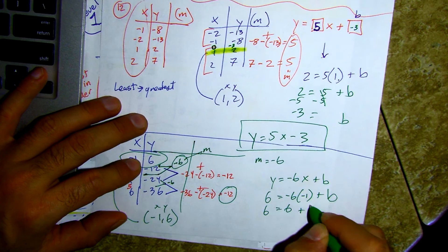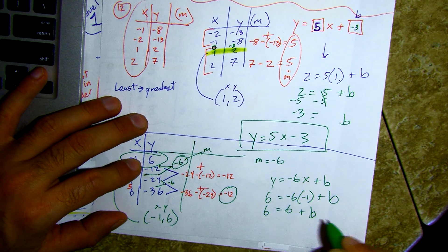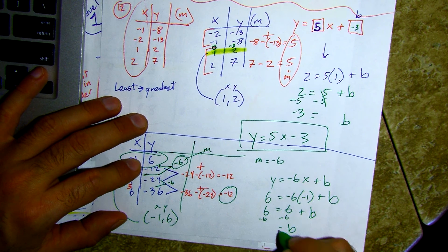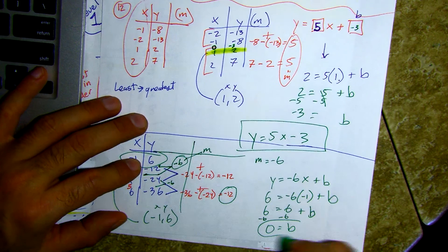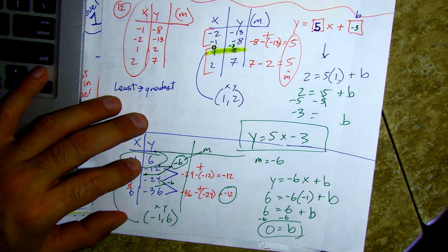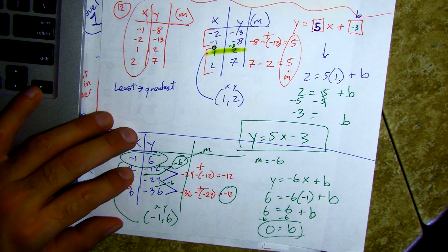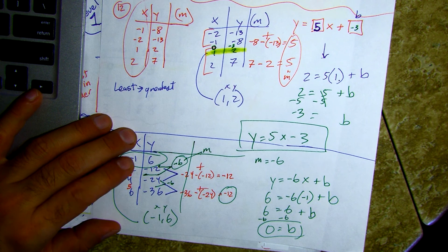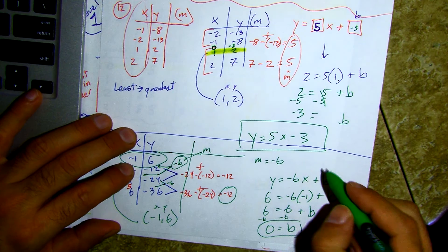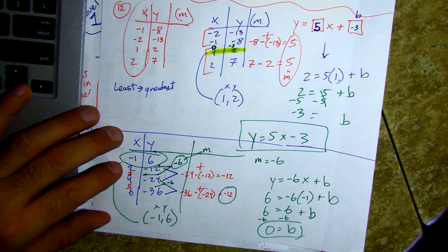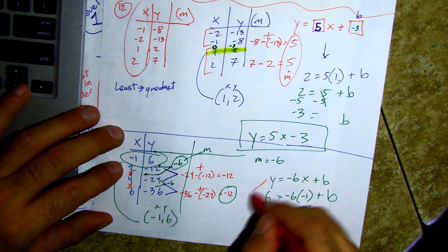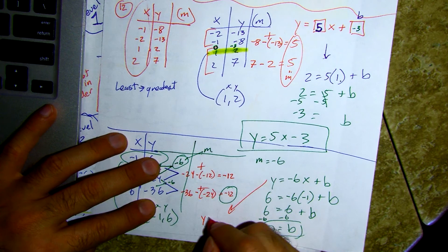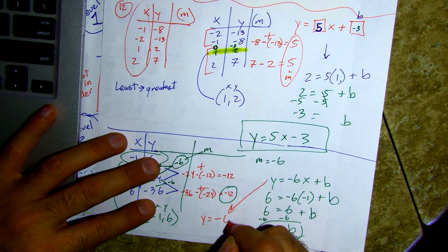So I know my b value is zero. My final answer: y equals negative six x plus zero — I can leave that out. Go ahead and screenshot it. We are running out of time so I'll push the pace a little.